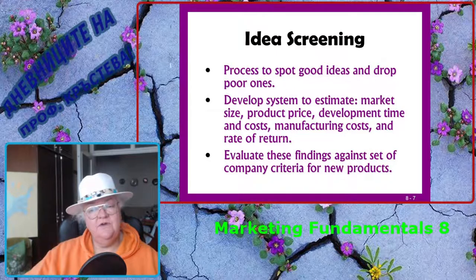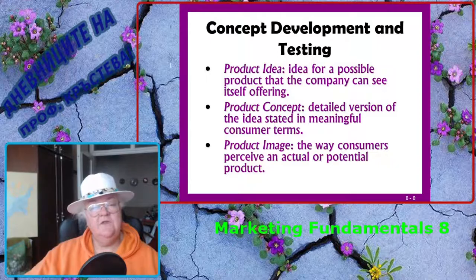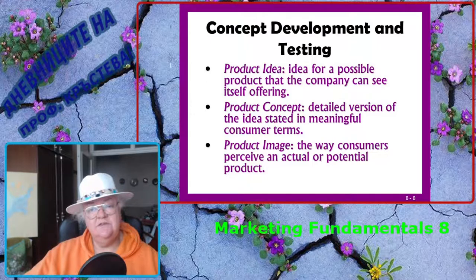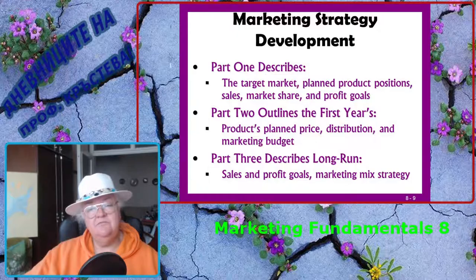You need to evaluate these findings against a set of company criteria for new products. Concept development and testing consists of several terms. The product idea is the idea for a possible product that the company can see itself offering. The product concept is the detailed version of the idea stated in meaningful consumer terms. The product image is the way consumers perceive an actual or potential product. Marketing strategy development includes describers such as the target market, the planned product position, sales, market share, and profit goals.